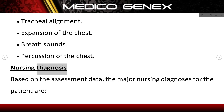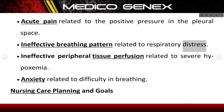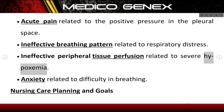Nursing diagnosis. Based on the assessment data, the major nursing diagnoses for the patient are: acute pain related to the positive pressure in the pleural space; ineffective breathing pattern related to respiratory distress; ineffective peripheral tissue perfusion related to severe hypoxemia; and anxiety related to difficulty in breathing.